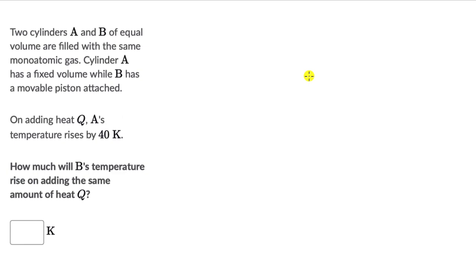Let's solve a couple of questions on the first law of thermodynamics. For the first one, we have two cylinders A and B of equal volume, which are filled with the same monatomic gas. Cylinder A has a fixed volume, while B has a movable piston attached. On adding heat Q, A's temperature rises by 40K. How much will B's temperature rise on adding the same amount of heat Q?